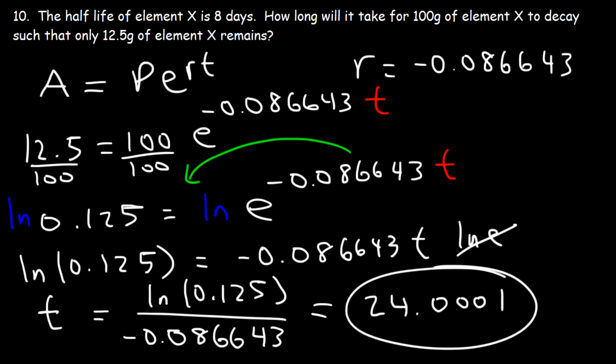You can also just figure it out conceptually. But sometimes you may not have a perfect number like 12.5 — they may give you a number like 9.6 or 11.4, in which case you can estimate conceptually, but if you want the exact answer, use the equation as we've used it in this problem.